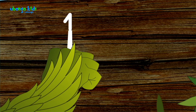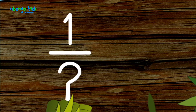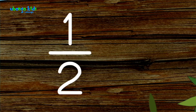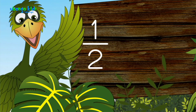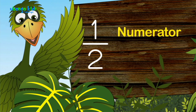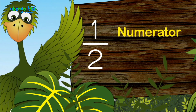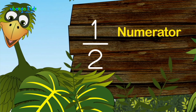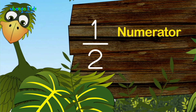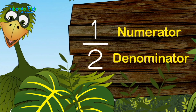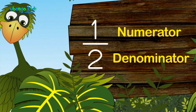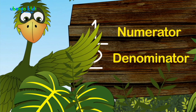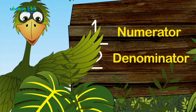And we write one and a half like this. The top number is called the numerator, and the bottom number is called the denominator. Numerator, denominator.